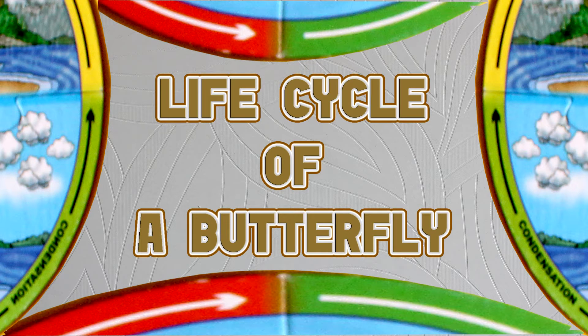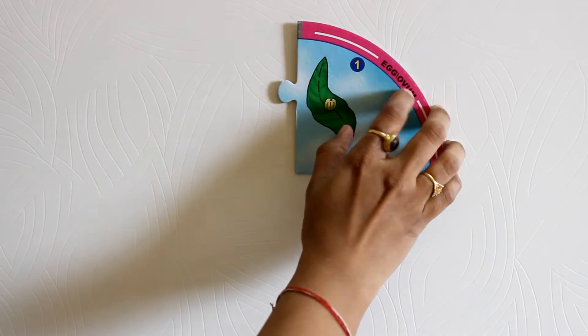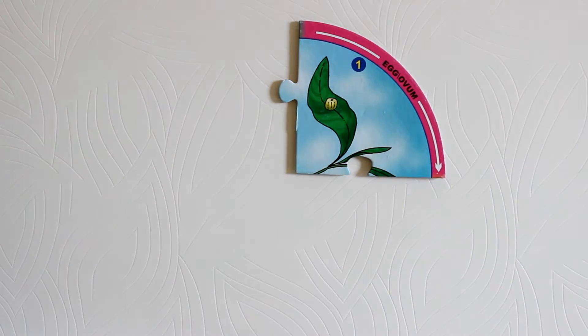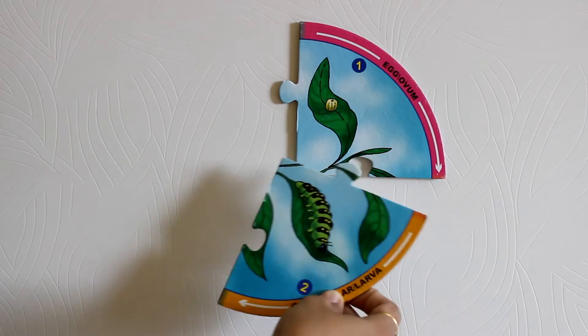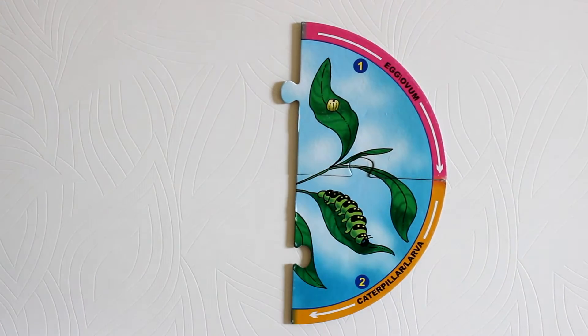Now we move on to the life cycle of a butterfly. Stage one is the egg, or shall we say ovum. The egg transforms itself into stage two as a caterpillar.